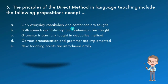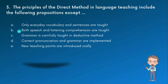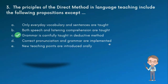Kita lihat kembali pilihannya. Only everyday vocabulary — bisa, diajarkan. Both speech and listening — ada. Grammar carefully taught in deductive method — ini biasanya ada di grammar translation method, bukan direct method. Correct pronunciation and grammar are implemented — diajarkan. New teaching points introduced orally — ya. Jadi jawaban yang tepat adalah C karena ini 'kecuali'. Di direct method, guru mengkoreksi tapi tidak secara langsung menyalahkan — misalkan siswa bilang 'I eating', guru mencontohkan 'I am eating' tanpa menyalahkan langsung.